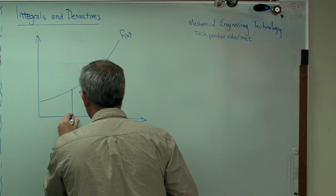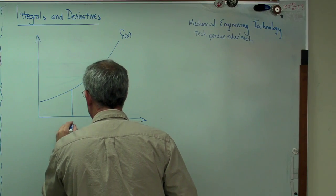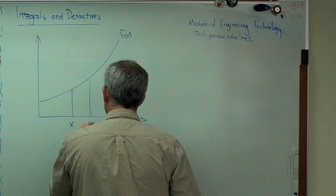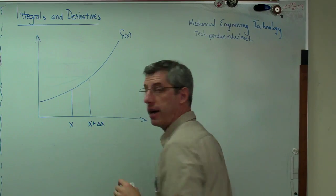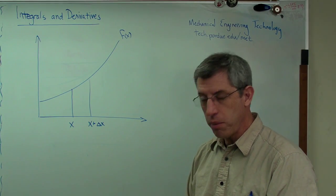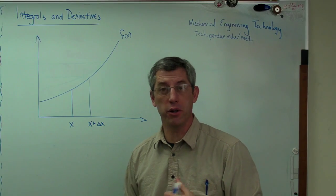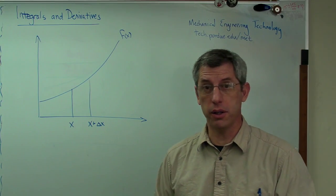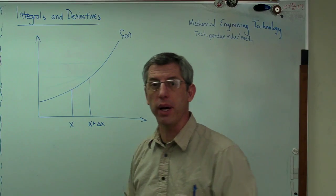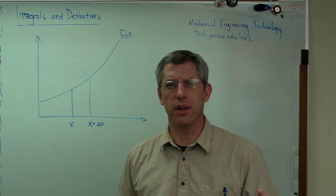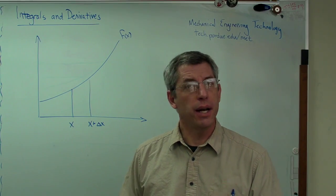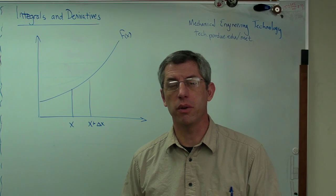And along here, I'm going to define two points, x and x plus delta x. Now remember, when you're figuring a derivative, what you're trying to do is you're trying to find the slope of a function, its slope at some point. Well, why would you want to do a slope? Who knows? There's lots of very good reasons why you'd want to do a slope.